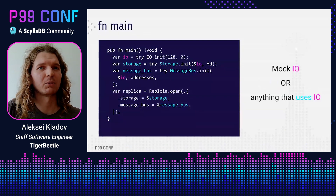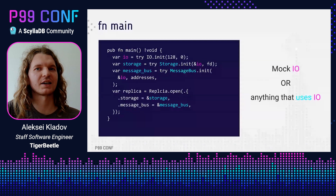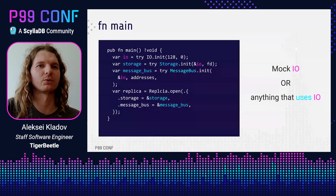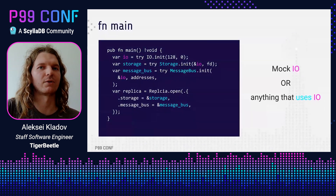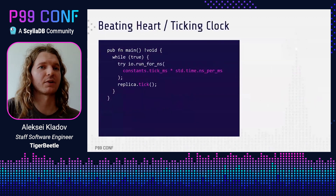For TigerBeetle, we pass IO to two distinct components — storage for disk access and message bus for networking. For our simulation testing, we actually mock at this layer — we mock storage and network rather than mocking IO directly. This allows injecting more nefarious coordinated failures. Still, passing an IO object around makes it clear what you have to mock. You can mock any set of components that shields the rest of the system from input and output.